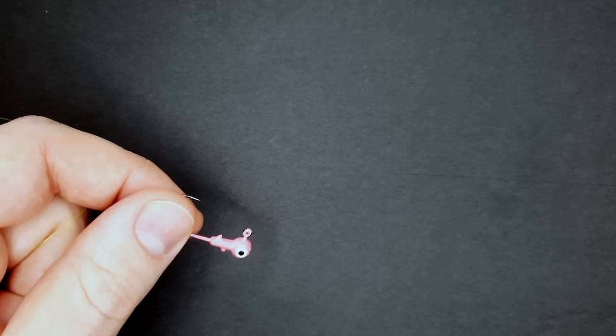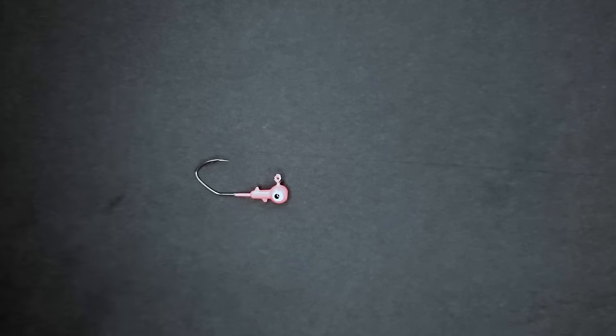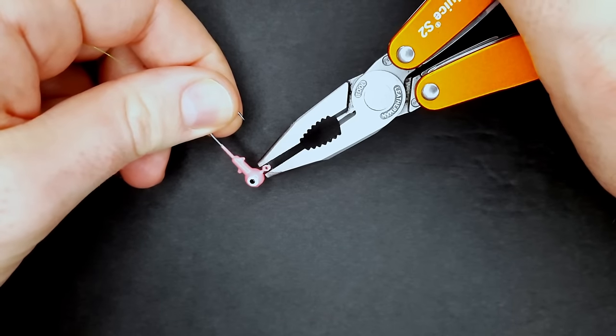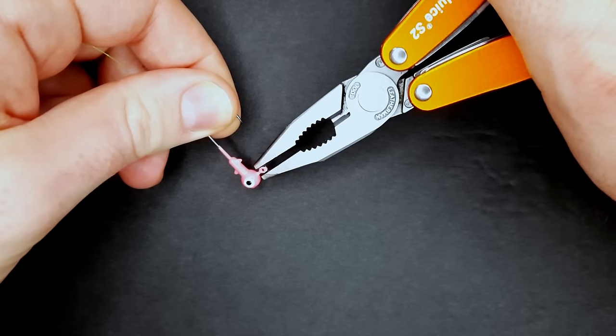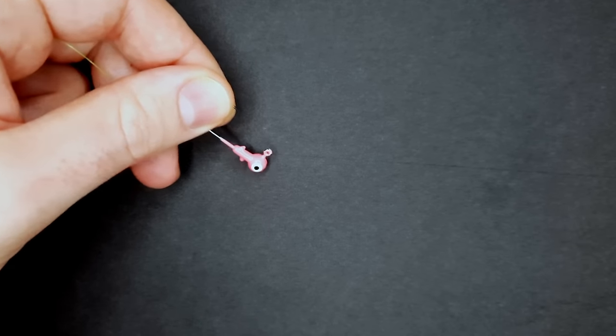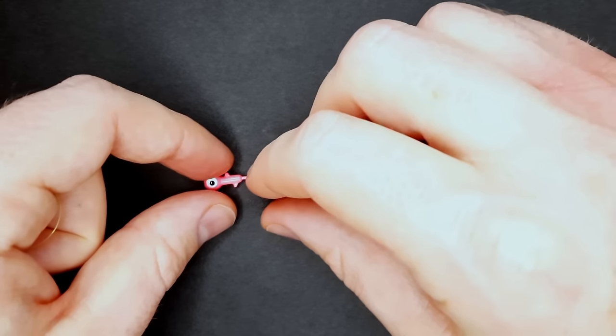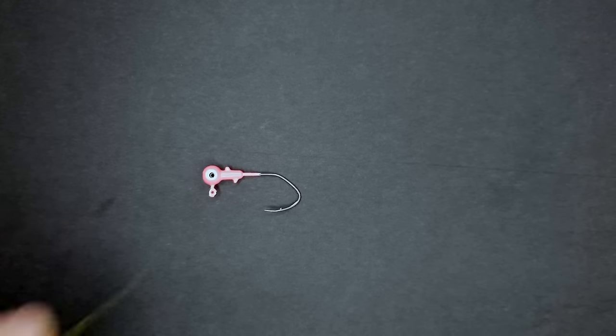You want to take a pair of pliers and close that eyelet. Just clamp down on there and close that eyelet. Otherwise, you're going to have an issue tying the loop knot, plus you could end up losing the entire jig by that line going through the gap. So once you fix that...